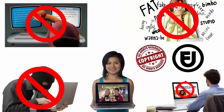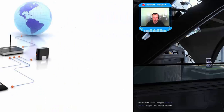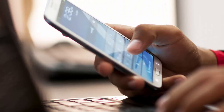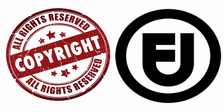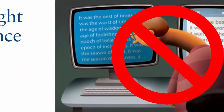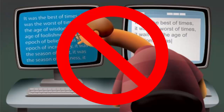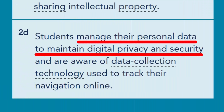Your students must learn to be mindful about all these social interactions online or when using network devices such as internet-connected computers or tablets, multiplayer gaming systems, and cell phones. They must also learn to demonstrate an understanding of and respect for the rights and obligations of using and sharing intellectual property — in other words, abiding by copyright and fair use, citing resources, gaining or giving permission to use content, avoiding plagiarism, and understanding and using Creative Commons.